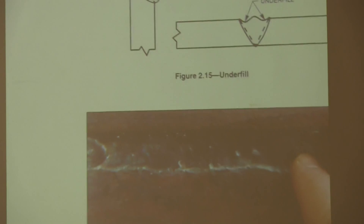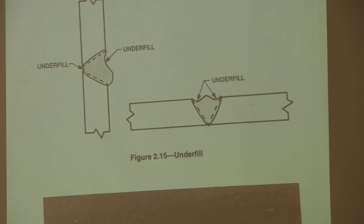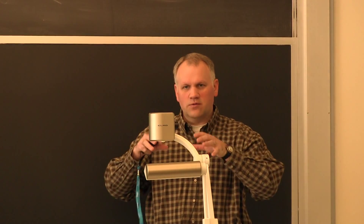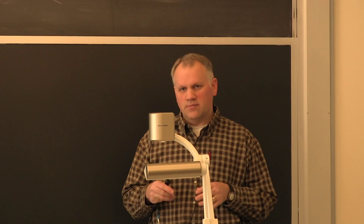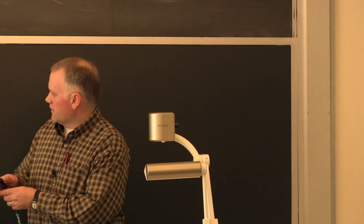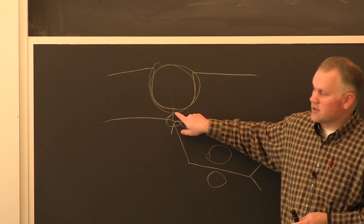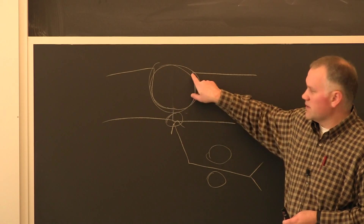Another discontinuity that can become a defect is underfill — basically, just like it sounds, you didn't fill up the joint as much as you were supposed to. Underfill is at the top of the weld where you'd be filling it up, whereas incomplete joint penetration is at the bottom — if you didn't penetrate down here when you were supposed to, that's incomplete penetration. If you didn't fill it up at the top, that's underfill.